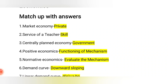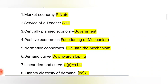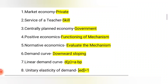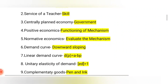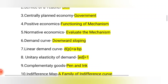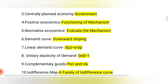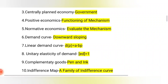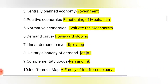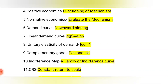Market economy is a private economy. Service of a teacher is a skill. Centrally planned economy is a government-based economy because all decisions are taken by the government. Positive economics deals with the functioning of the mechanism — what it is and what was.